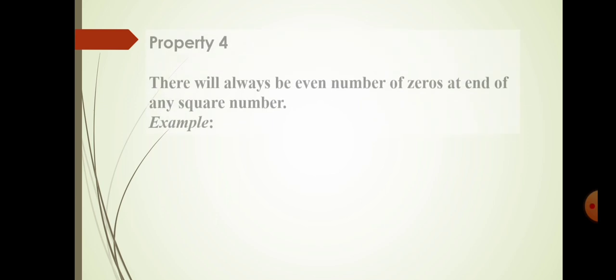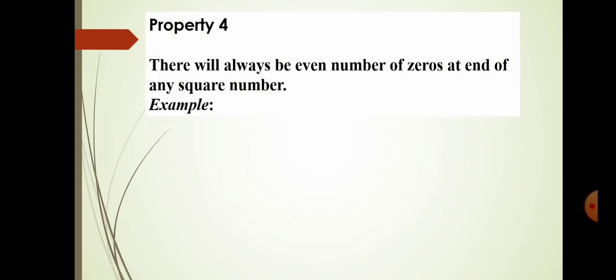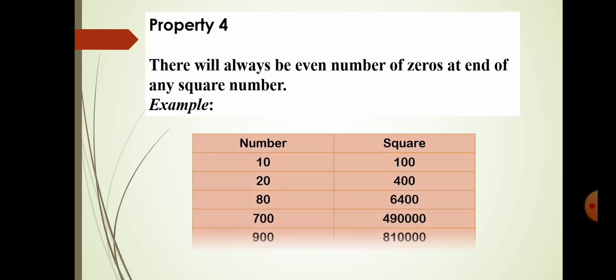Property number 4: There will always be an even number of zeros at the end of any square number. For example, 10 squared is 100 — two zeros. 20 squared is 400, 80 squared is 6400, and 700 squared is 490,000. Notice that 2 zeros become 4 zeros when squared. So there is always an even number of zeros at the end of a square number.